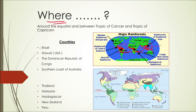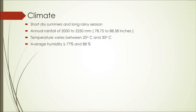These forests are mainly found in countries like Brazil and Latin America, Hawaii, the Democratic Republic of the Congo in Africa, the southern coast of Australia, Thailand, Malaysia, Madagascar, New Zealand, and Peru — another Latin American country next to Brazil. These are the main countries where we find tropical rainforests or evergreen forests.